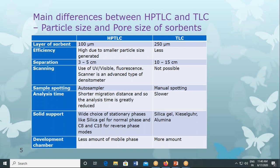Why does bigger particle size lead to lower efficiency? Because the greater the particle size, the smaller the surface area available for separation and adsorption. Less amount of substance can be adsorbed in a given area. More surface area means faster adsorption and therefore faster equilibrium is achieved, giving better separation. That is why we always aim for greater surface area — once we have greater surface area with smaller particle size, efficiency automatically goes up.